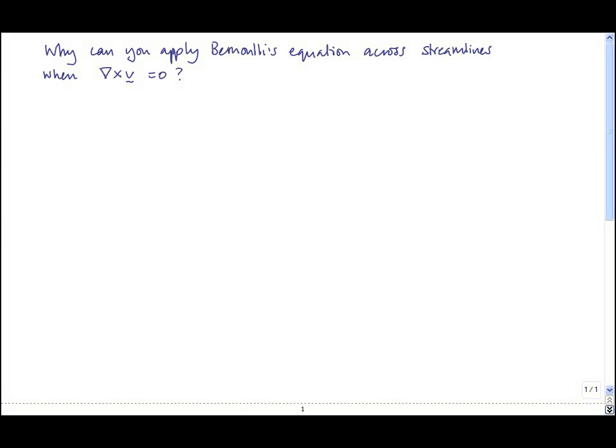So you may well ask, why can you apply Bernoulli's equation across streamlines when the curl of the velocity is equal to zero?